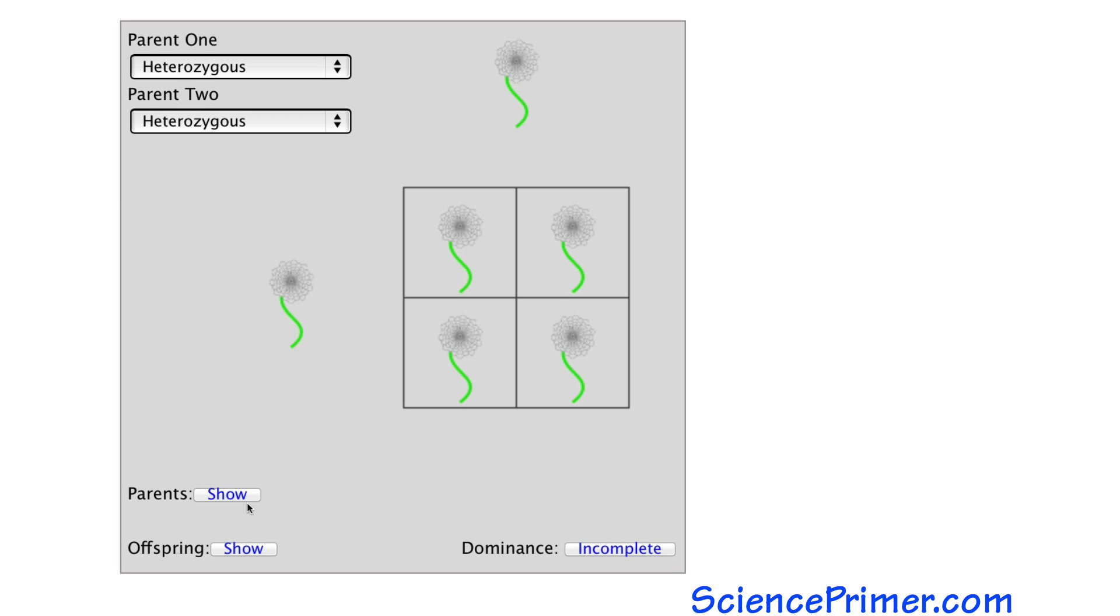To set up a single locus Punnett square, the genotype of each parent is placed on the sides of a four-chambered box. One parent's alleles are placed across the top. The alleles of the other parent are placed down one side. The alleles on the edges guide how the central squares are filled in.